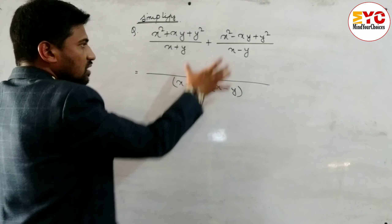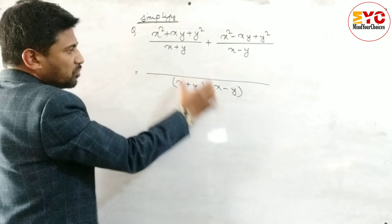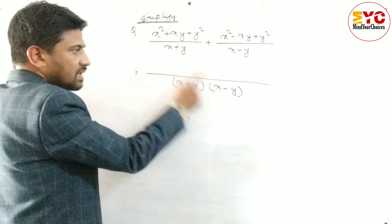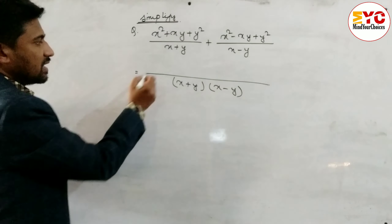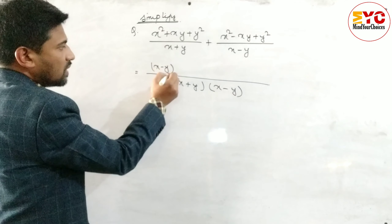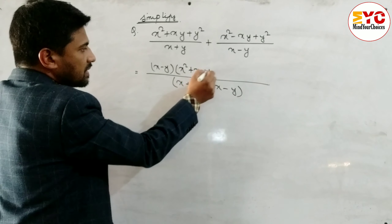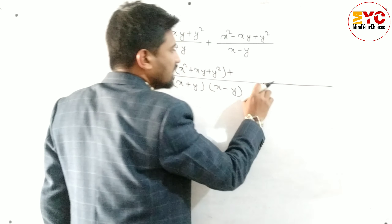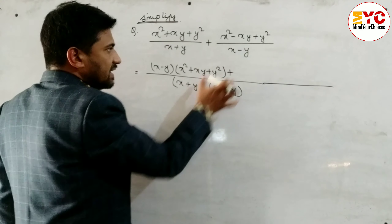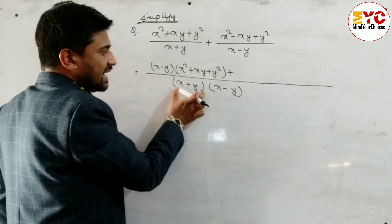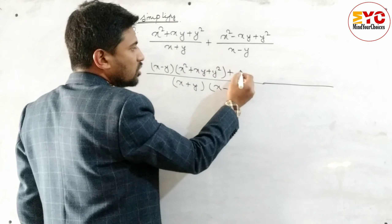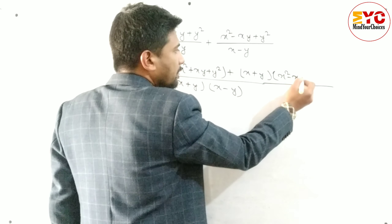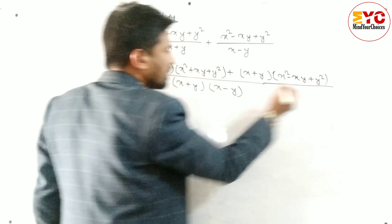Now learn properly how to take LCM. Take both terms — nothing common — so we take the remaining. After that we divide the denominator. When we divide, (x + y) and (x + y) cancel, leaving (x - y) to multiply with the numerator. So we write (x - y)(x² + xy + y²), plus (x + y)(x² - xy + y²).